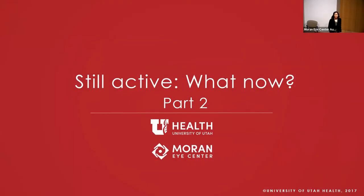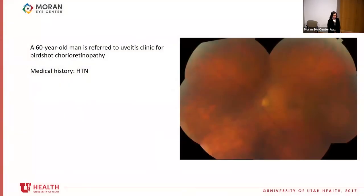This case is a 60-year-old man referred to the uveitis clinic for birdshot chorioretinopathy — a prototype ocular inflammatory disease with a specific phenotype and strong HLA association but no associated systemic rheumatologic disease. Without treatment, birdshot has a known course of progressive visual decline from visual field loss, nyctalopia (night blindness), and abnormal ERG. It is characterized by deep hypopigmented yellowish spots scattered throughout the posterior pole in a birdshot gunshot pattern.